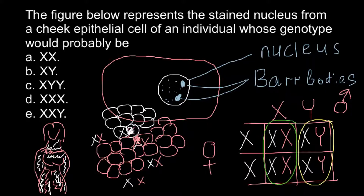The only genotype present here that would form two bar bodies is answer D. This may happen in females who have one extra X chromosome, genotype XXX. In order to keep balance, only one X chromosome would be active, and two other chromosomes would be turned off and would form bar bodies. So the correct answer is D.